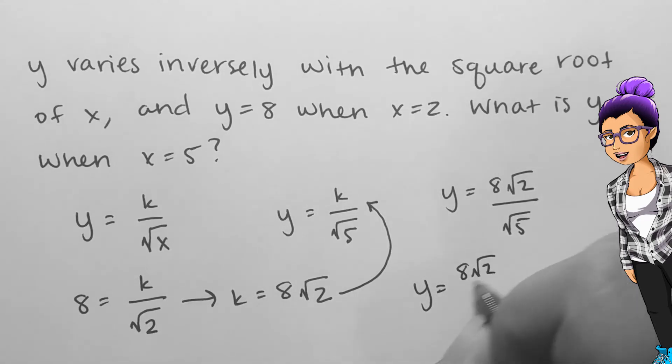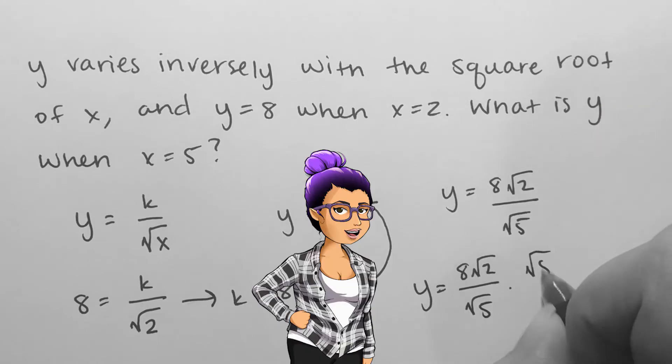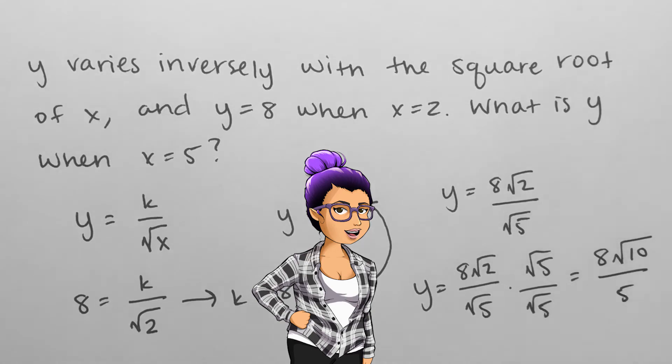If you'd like to rationalize the denominator, you can multiply both numerator and denominator by square root of 5. This leaves some simplification to be done so that an alternative correct answer is 8 times square root of 10 all over 5.